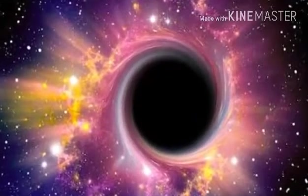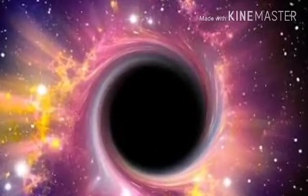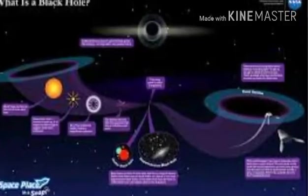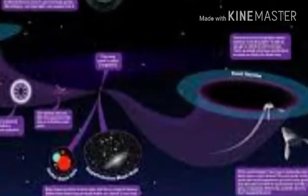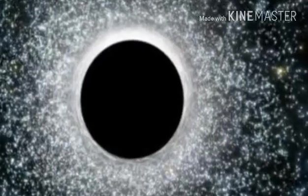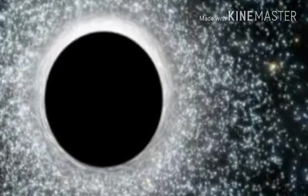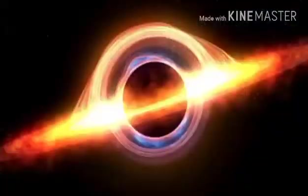But naked singularities are theoretical singularities that are exposed to the rest of the universe for some reason. Below you can see an illustration of a black hole wrapped in its event horizon, dotted line, on the left, and a naked singularity on the right.